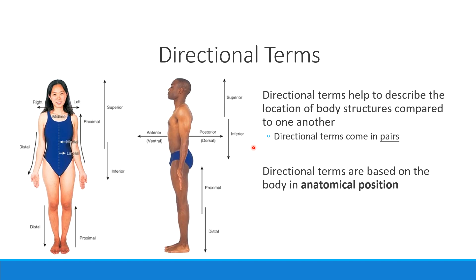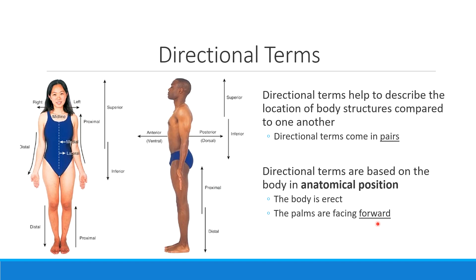When we talk about any of these directional terms, something for you to be familiar with is called the anatomical position. The anatomical position is the reference we use when comparing structures. It's not the normal way that you stand or sit. When we talk about anatomical position, the body is fully erect, meaning you're standing completely tall. The palms of your hands are facing forward — usually when I stand up, I like my palms facing toward my body, but in anatomical position I need those palms facing forward.